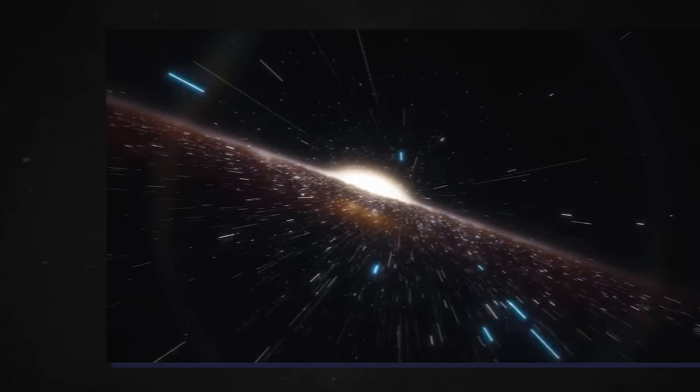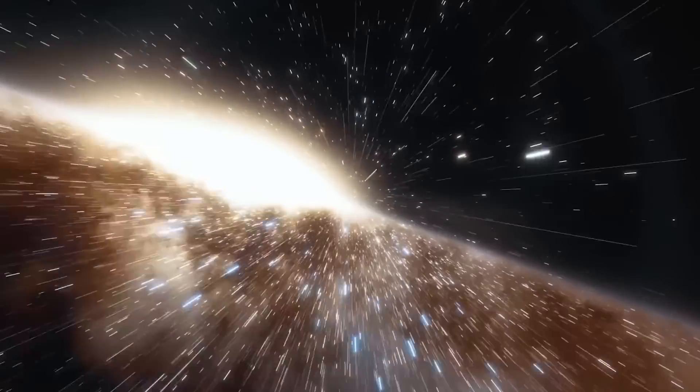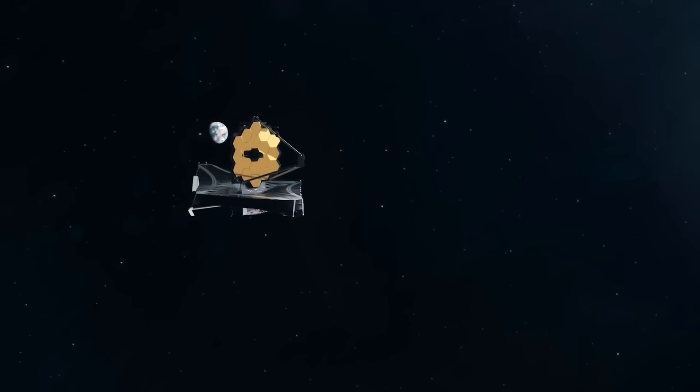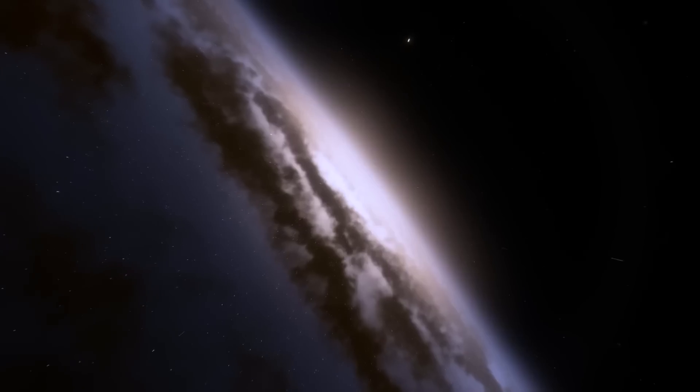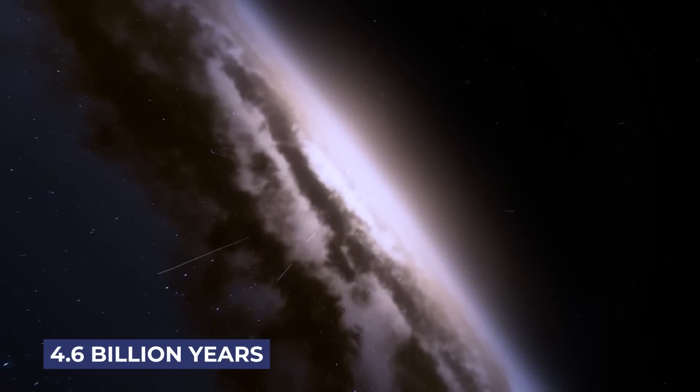more distant environments. A deep field image of the galaxy cluster SMACS 0723 in the southern constellation Volans was one of Webb's first pictures as well as the first one to be made available to the public. The exposure,